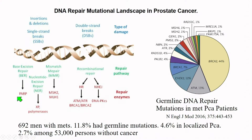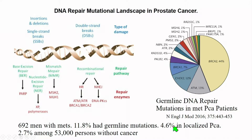Base excision repair is where you take out the mutated base and put a new one in. Double-strand mutations can occur after a single-strand mutation if you don't repair things. There are a whole series of genes related to DNA repair, and if you have germline mutations in any of these genes, you're at increased risk. A New England Journal article looking at 692 men with metastatic prostate cancer found 12% had germline mutations, compared to only about 5% with localized prostate cancer — meaning germline mutation carriers who develop prostate cancer have worse disease that metastasizes earlier. Looking broadly, 2.7% of people carry a germline mutation in one of these many DNA repair pathways.